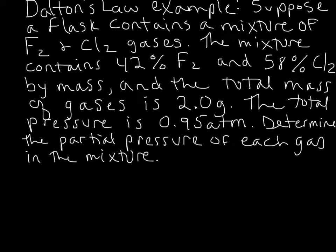Let's do a little example for Dalton's Law. This is a relatively typical example where we have a mixture of gases in a flask, and we're asked to find the partial pressure of each gas in the mixture. In this case, we have a mixture of fluorine and chlorine gases, where we have 42% fluorine and 58% chlorine by mass. We were given the total mass of gases, which is 2.0 grams, and a total pressure. We need to figure out what the partial pressure of fluorine gas and chlorine gas is in this mixture.